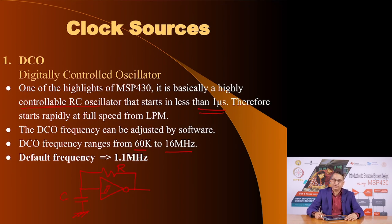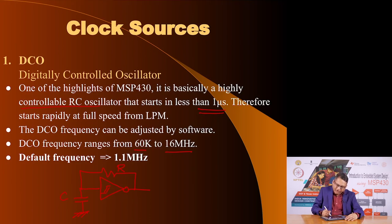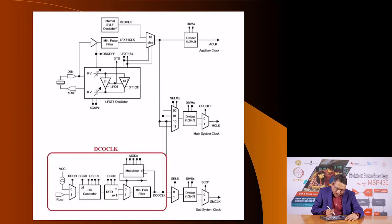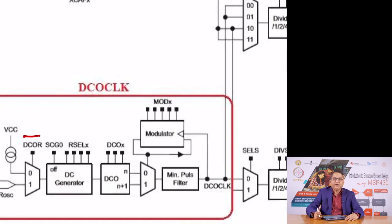Because the DCO is a very quick-start oscillator, it can start working in less than a microsecond and can be used to get out of low power modes of operation. We are going to consider low power modes of the MSP430 in a subsequent lecture. The DCO frequency can be adjusted by software by writing appropriate values into various registers. The default frequency after reset is 1.1 megahertz, so if you do not do anything and just reset your microcontroller you do not have to make any selections — the DCO frequency will be 1.1 megahertz.